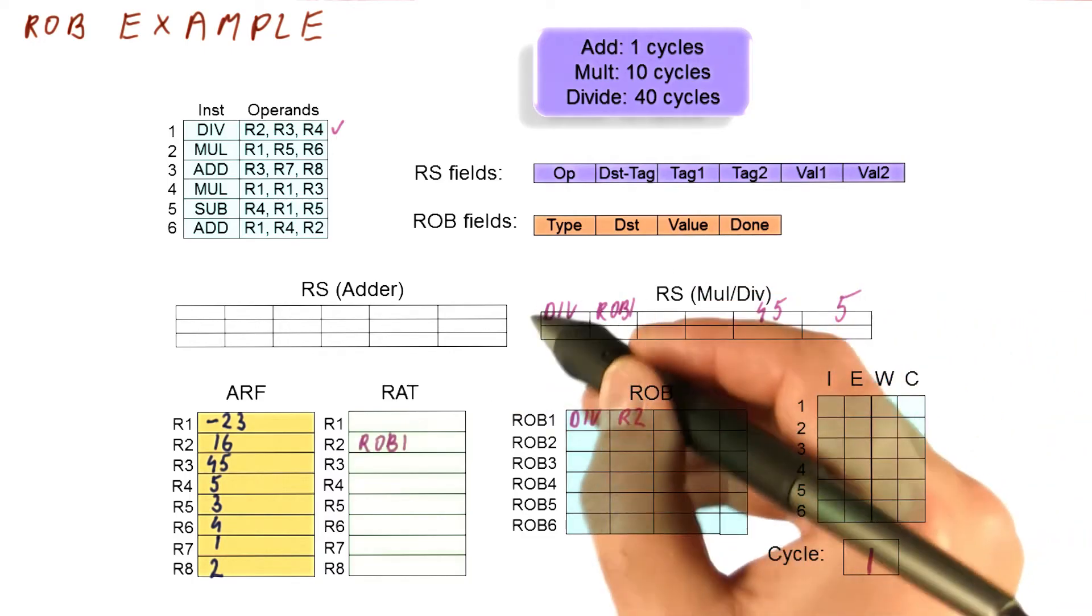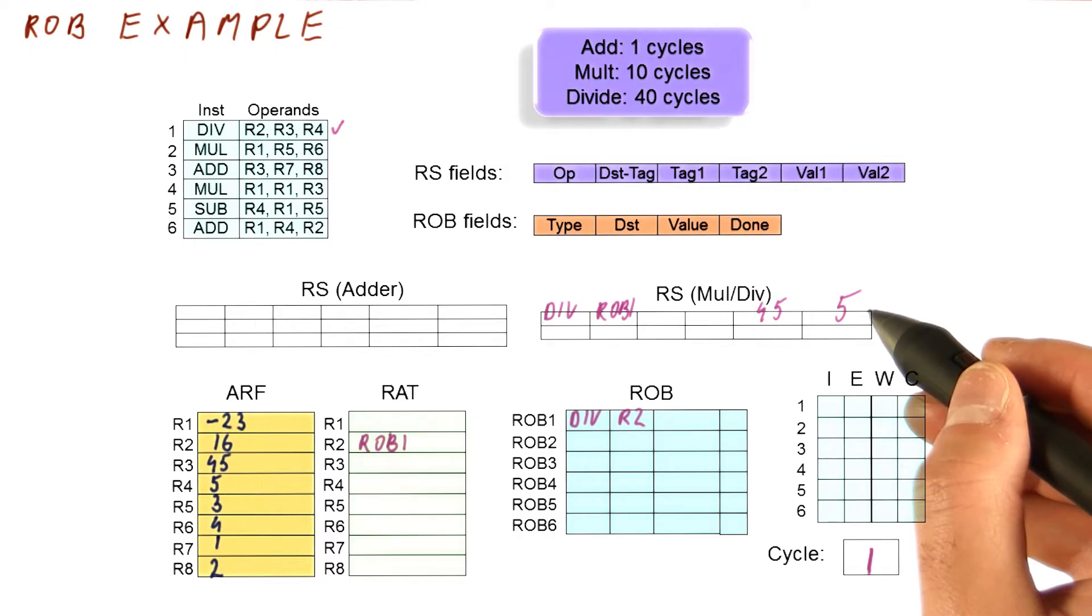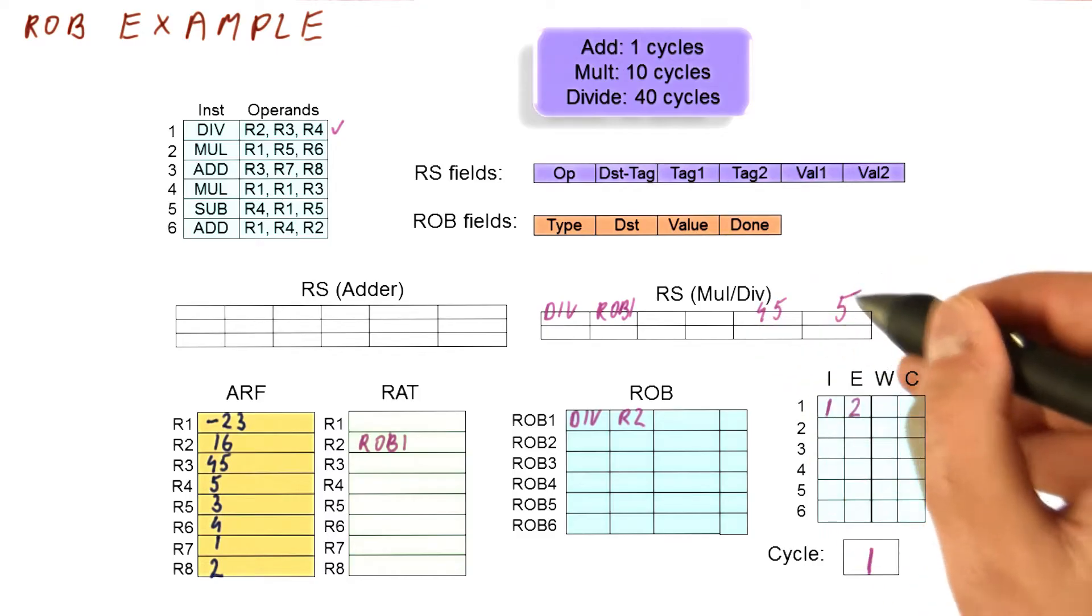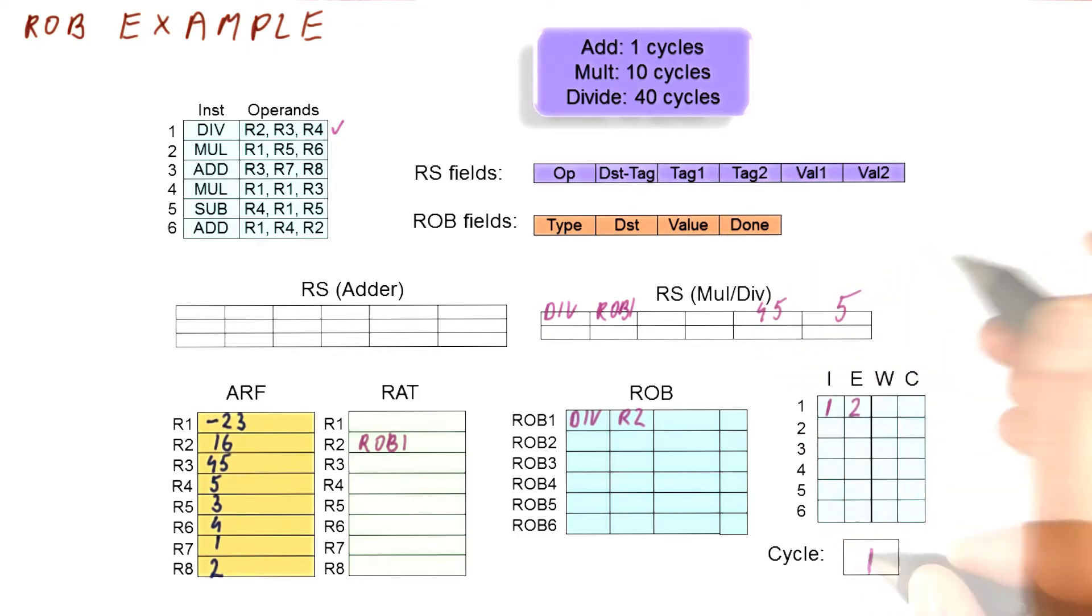And then we are going to rename R2 so that it points to ROB1 from now on. And then, because we said that we will be able to dispatch in the very same cycle and begin execution in the next cycle, we have issued this instruction in cycle one. It's going to begin executing in cycle two, because both of its operands have values ready to go.